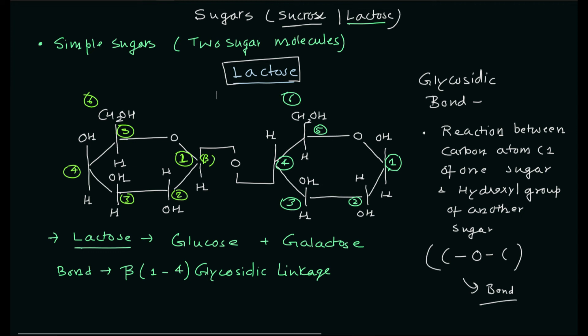So we have two important disaccharides: sucrose and lactose. I want you to understand the differences between them — their monomeric units and how they are combined. In my next videos I'll cover polysaccharides, including glycogen, starch, and cellulose — their structures and functions in living systems as energy sources and structural fibers. That's the basic biochemistry on carbohydrate molecules. If you like the content of this channel, please show your support by subscribing. Thank you, and I'll see you in the next video.